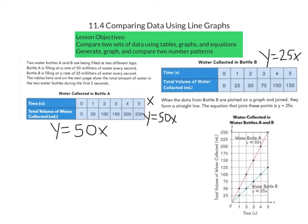So in our table, the time is equal to our X value, and our Y value is the total volume of water collected, or Y equals 25X. We can change the data in the tables into ordered pairs, which we can graph into straight line graphs. In the graph below, we can see two separate lines graphed, and we can compare the two lines to help us answer some questions.